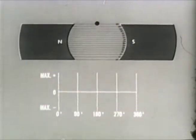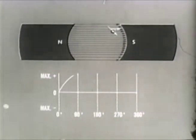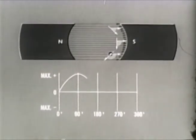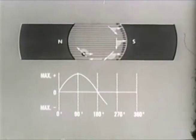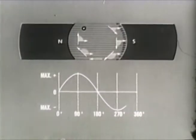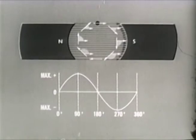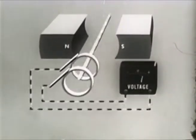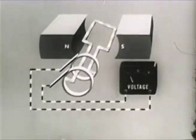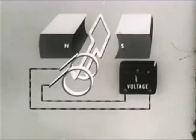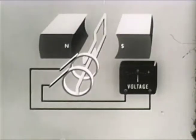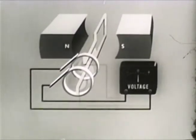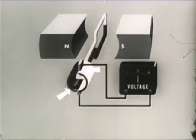A graph of EMF versus conductor position during one revolution will be a sine wave representing alternating current or AC. All rotary generators produce AC internally. What you have seen so far is really the theory and operation of a basic AC generator. But our purpose was to explain the principles of operation of a DC generator. To get direct current, we will attach each end of the conductor to a segment of copper forming a commutator.